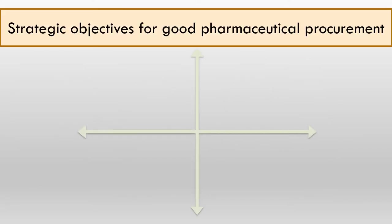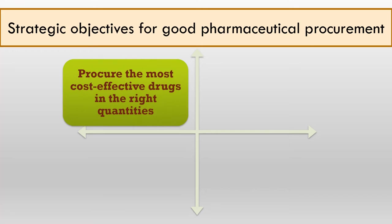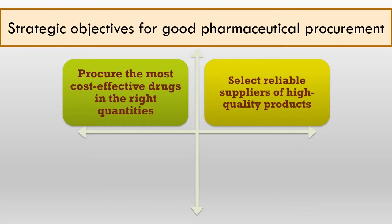Here the strategic objectives for good pharmaceutical procurement are explained. The first strategic objective is that all organizations responsible for procurement, whether they are public or private, should develop an essential drug list to make sure that only the most cost-effective drugs are purchased. Procedures must also be in place that accurately estimate procurement quantities to ensure continuous access to selected products without accumulating excess stock.